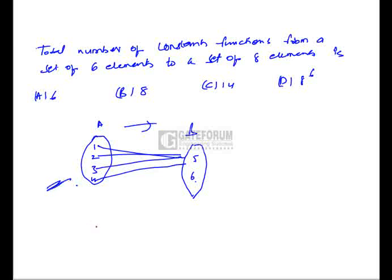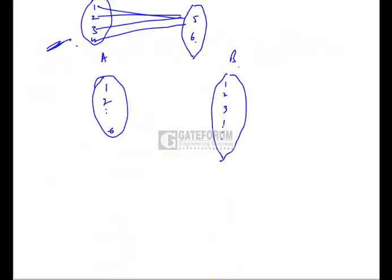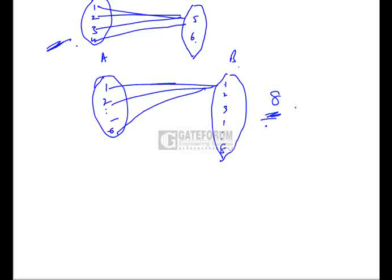In this question, set A consists of six elements and set B consists of eight elements. We have to find the number of possible constant functions. All the elements of A can map to either element 1, or 2, or 3, and so on — total eight ways are possible. So the number of constant functions is eight, and the correct option is option B.